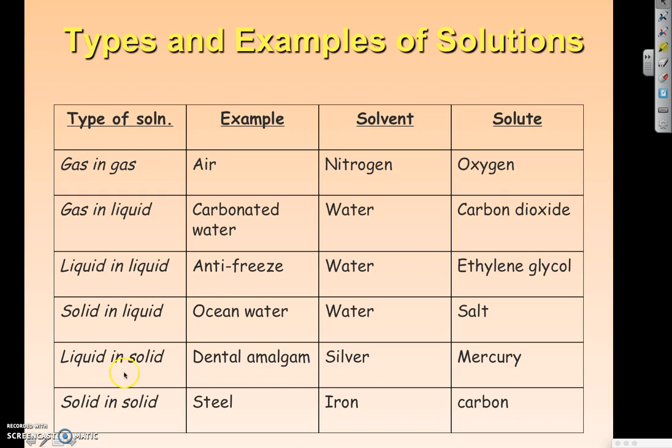You can have liquid in a solid. So, you can have liquid mercury, and that can actually be dissolved in solid silver, which is what are used for fillings. And then you can have solid in a solid. So, you can have solid carbon being dissolved in solid iron, and that makes the alloy steel. So, as you can see, solutions are much more far-reaching than you probably thought.